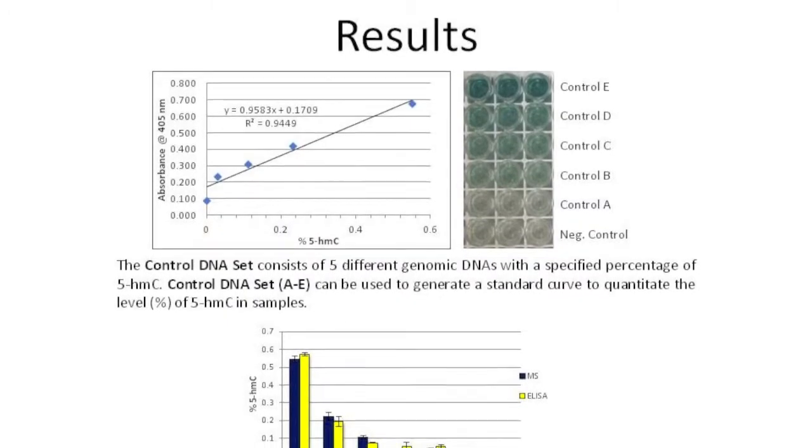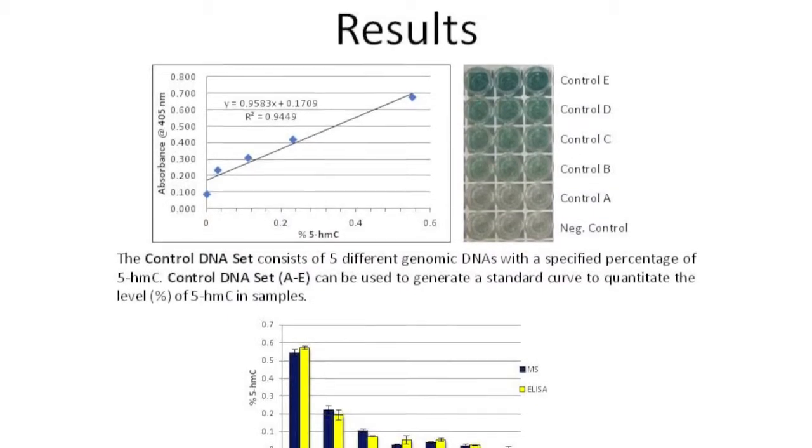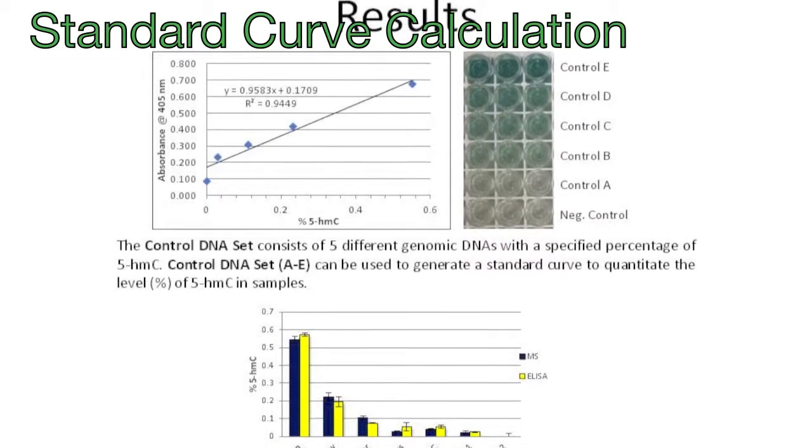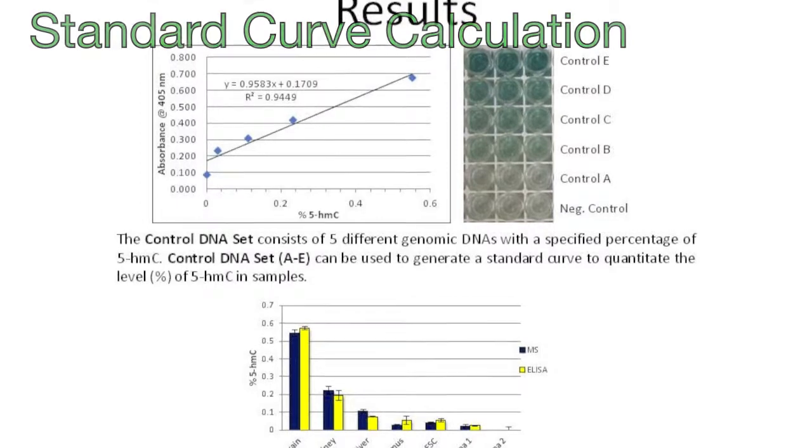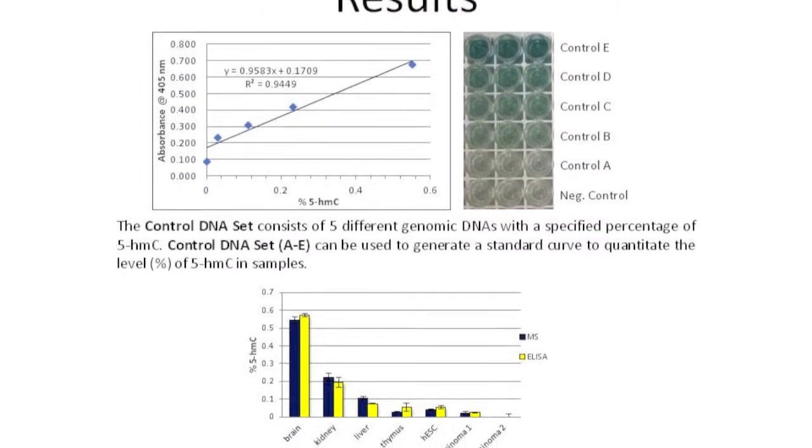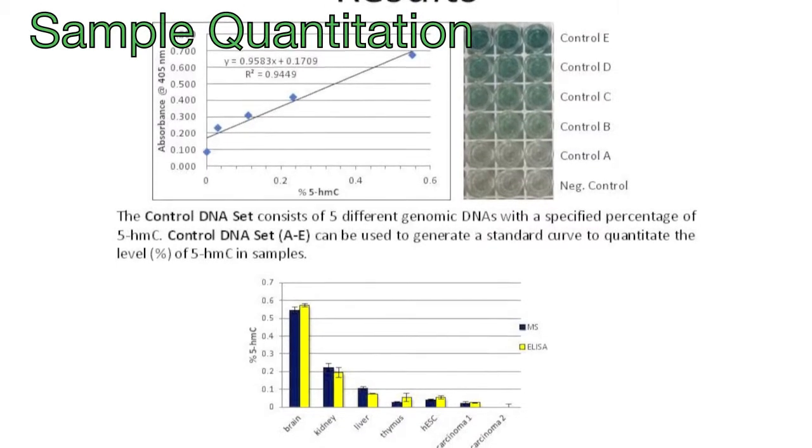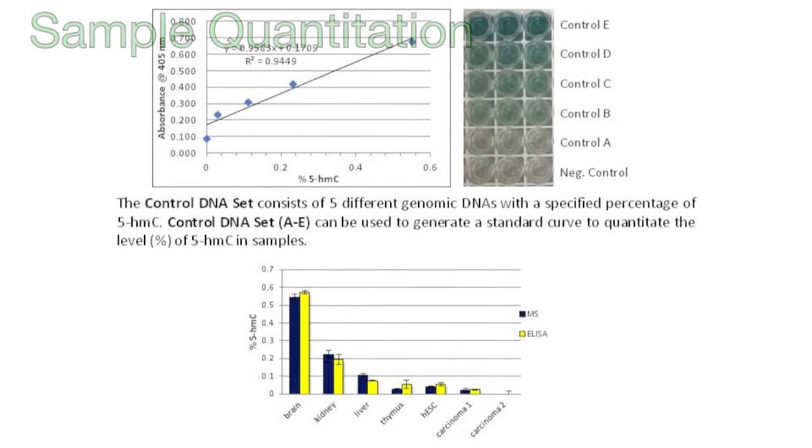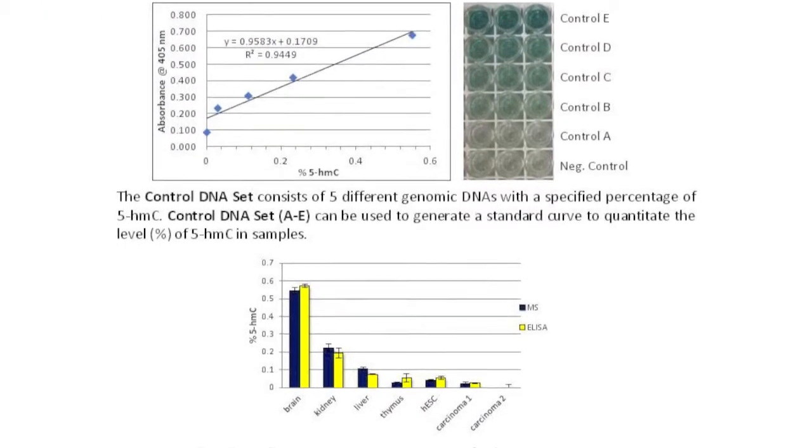The two figures at the top of the page show a typical standard curve that can be generated using the controlled DNA set included with the kit. The set consists of five different genomic DNA controls, each with a specified percentage of 5-HMC content. The standard curve can then be used to quantitate the percent of 5-HMC in unknown samples. The standard curve is easy to construct and is very reproducible.